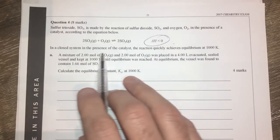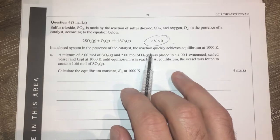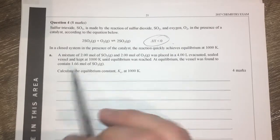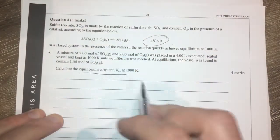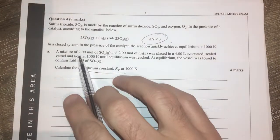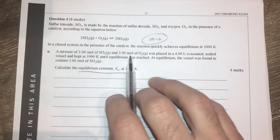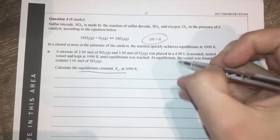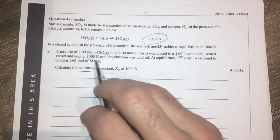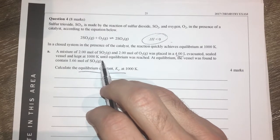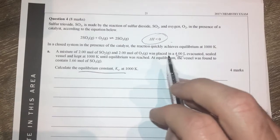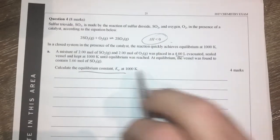In a closed system in the presence of a catalyst, the reaction quickly achieves equilibrium. So we're going to first of all find out what the equilibrium constant is before I even read any of this. So a mixture of two moles of sulfur dioxide and two moles of oxygen was placed in a four liter evacuated sealed vessel and kept at a standard thousand degrees Kelvin until equilibrium was reached. At equilibrium the vessel was found to contain...